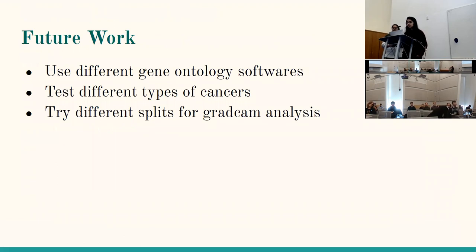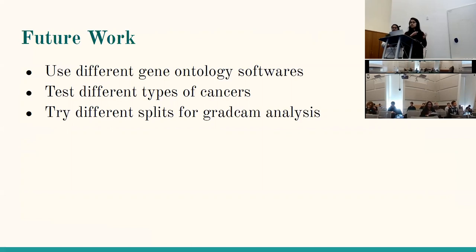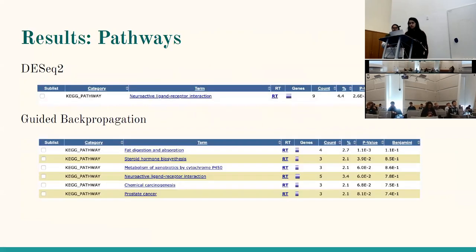For future work, we would like to test different gene ontology software to see if they classify disease more accurately. We would like to test different types of cancer, not just lung. We would also like to try different splits for our back propagation analysis — for example, averaging only on cancerous tissue to find different biomarkers. Overall, we found that guided back propagation identifies more pathways, most of which the literature showed to be relevant, though it does produce some false positives.